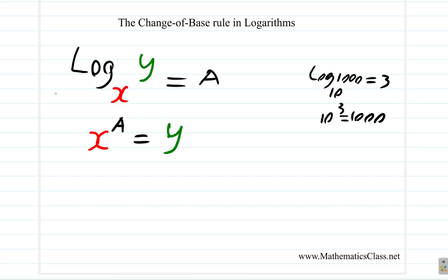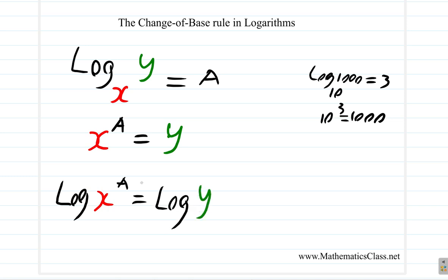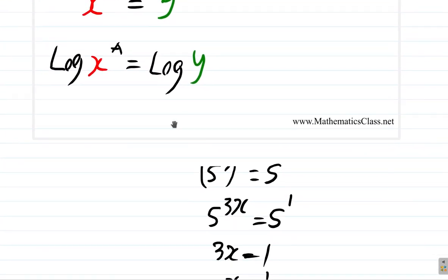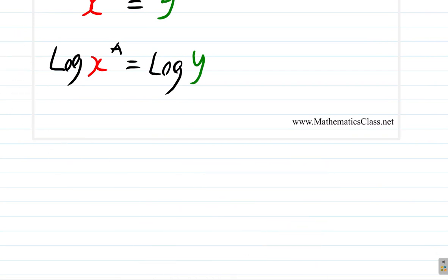Just change this to index form. This is saying x to the A equals y. Suppose you log both sides — you find the logarithm of both sides. The log of x to the power A equals the log of y. The rule of logarithms says when you have log of a number raised to a power, you bring the power down: A times log x equals log y.